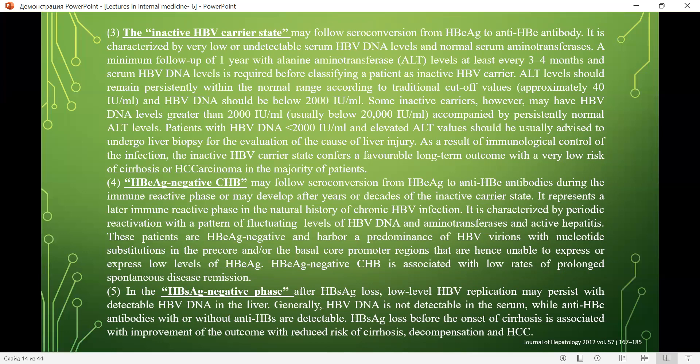As a result of immunological control of the infection, the inactive HBV carrier state confers a favorable long-term outcome with very low risk of cirrhosis or carcinoma in the majority of patients. The fourth phase — HBe antigen-negative chronic hepatitis B — may follow seroconversion from HBe antigen to anti-HBe antibodies during the immune-reactive phase, or may develop after years or decades of the inactive carrier state. It represents a later immune-reactive phase in the natural history of chronic HBV infection.